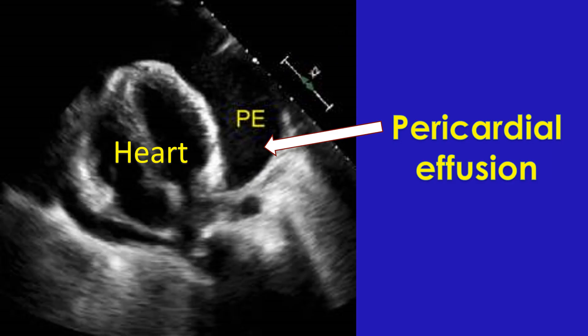If there is a collection of fluid between the layers of pericardium, it is reported as pericardial effusion. The estimated amount of pericardial effusion will be reported as mild, moderate or large. When there is cardiac tamponade, it will be noted as diastolic collapse of right atrium and right ventricle. Gross thickening and calcification of pericardium may be noted in constrictive pericarditis.